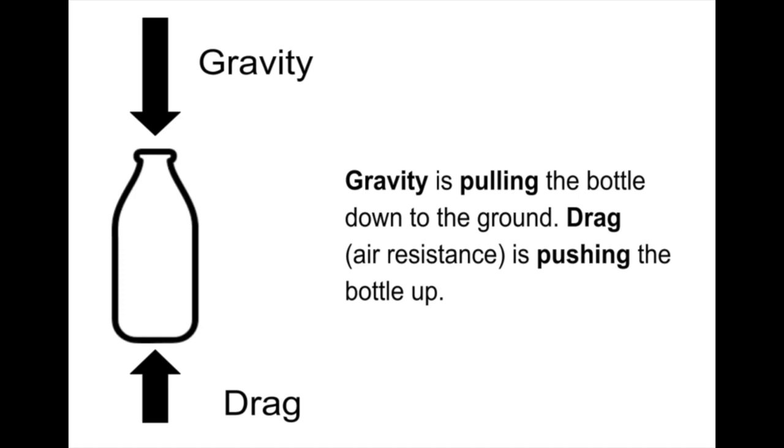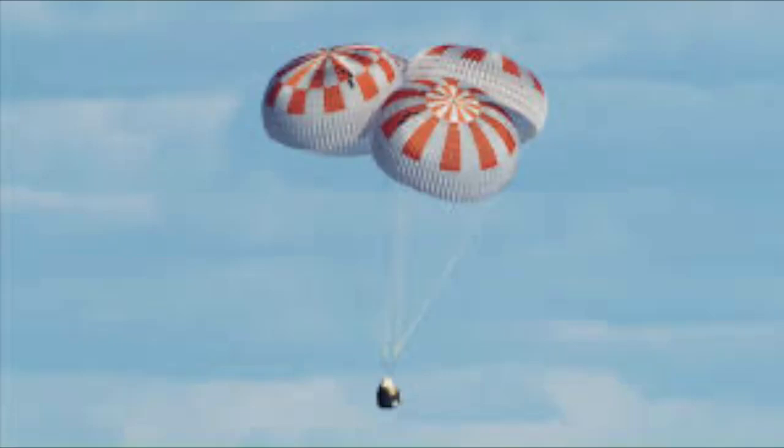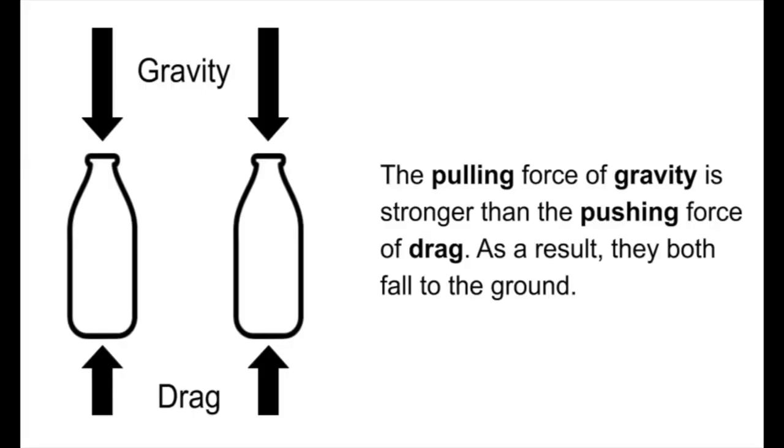Gravity is pulling the bottle down and drag is pushing up on the bottle, just like how parachutes work. Drag pushes up on the parachute, causing it to slow down. But as you can see here, and even looking at the arrows is kind of a clue, gravity is stronger than drag.